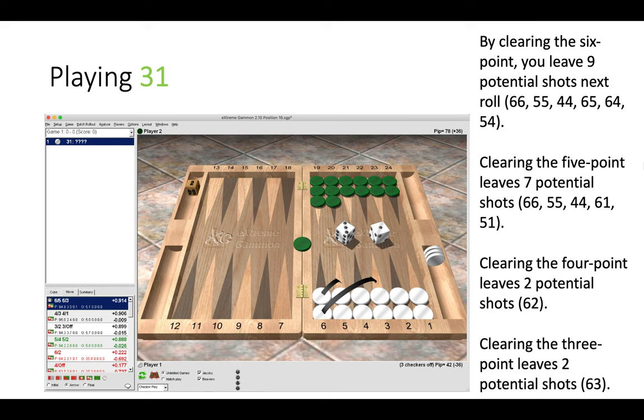Now in terms of long-term safety, we know this is true because if we put two green checkers on the bar instead of one, then clearing the 6-point would become right by a larger margin, and anything else then would become an error. And that's because, of course, if green had two checkers on the bar, he has better timing. He's going to stay around for longer, and we really need to be careful as white about not leaving awkwardness in the future.